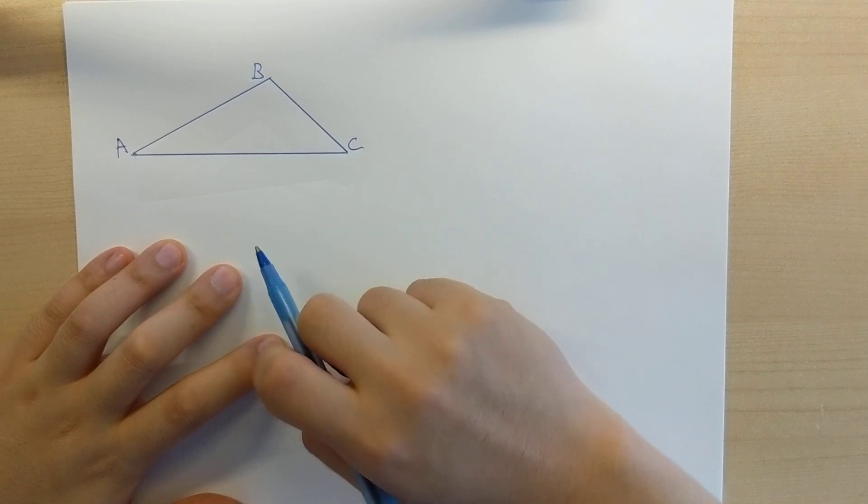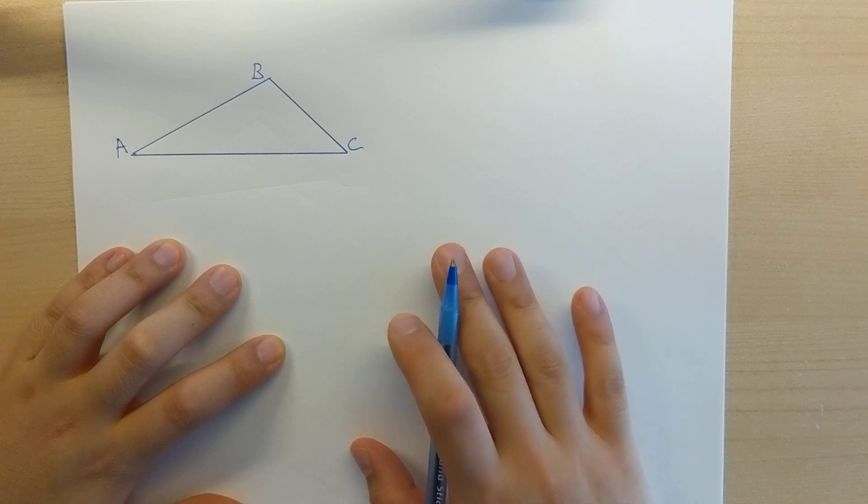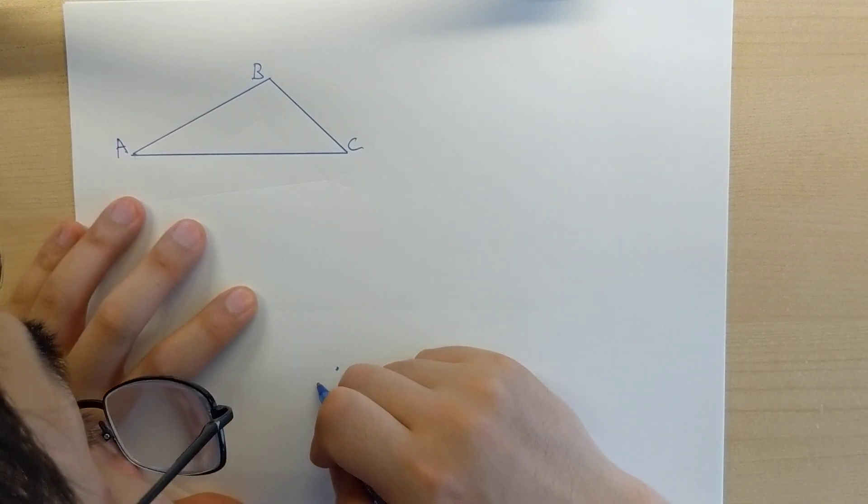We're going to be copying this. So, somewhere else on the bottom half of the paper over here, you're going to place a point right here, and we're going to call that point A prime.